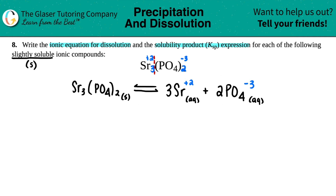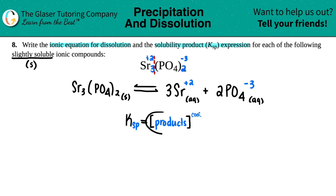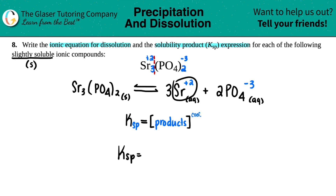Now we use this balanced equation to write the Ksp expression, the solubility product. The general formula is: Ksp equals the concentration of the products raised to their coefficients. Keep in mind that for any K value — Ka, Kb, Kc, Kp — no solids are allowed, which is why the solid reactant does not appear in the Ksp expression. So Ksp equals the concentration of the two products: Sr²⁺ and PO₄³⁻.